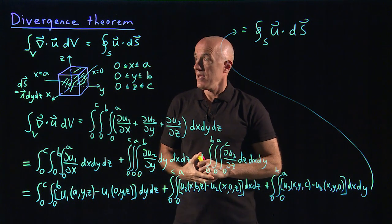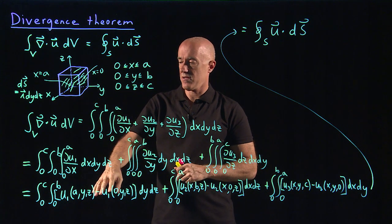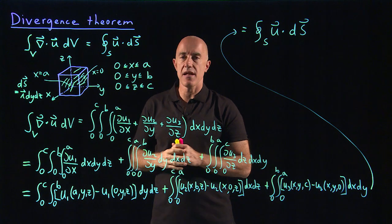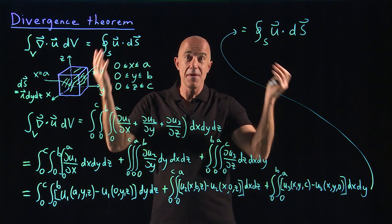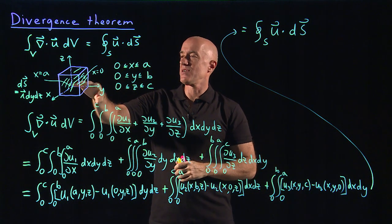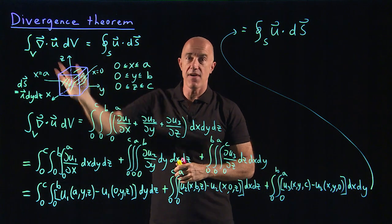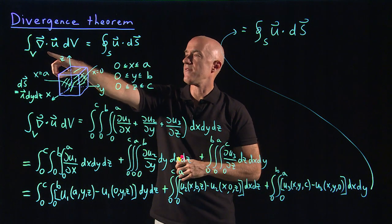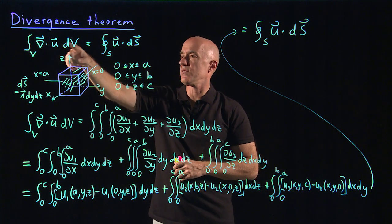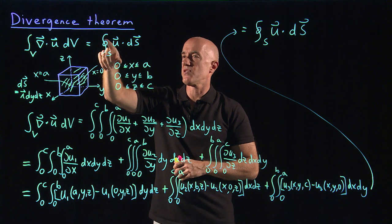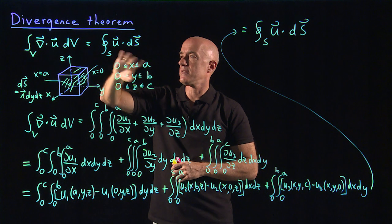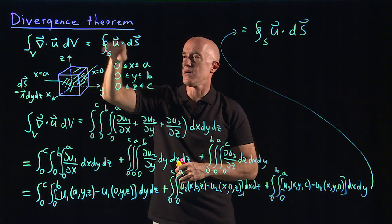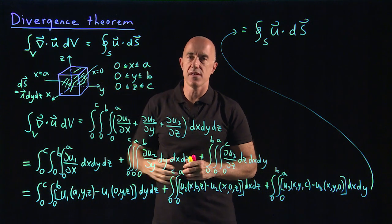In this video, I tried to give a rigorous proof of the divergence theorem for an axis-aligned cube, and then generalize that proof to an arbitrary surface enclosing a volume. The fundamental result is: the integral over the volume of del·u dV equals the integral over the surface of u·dS, valid as long as u is differentiable inside the volume.